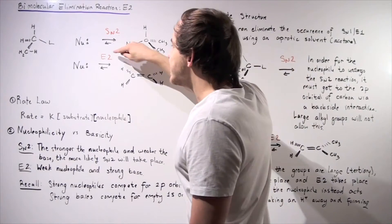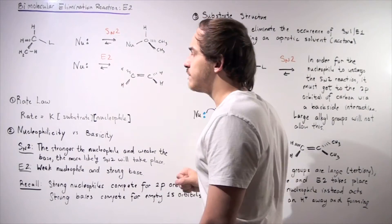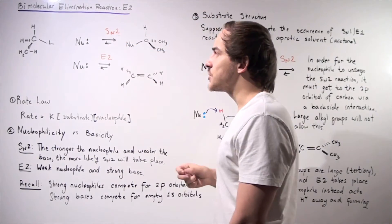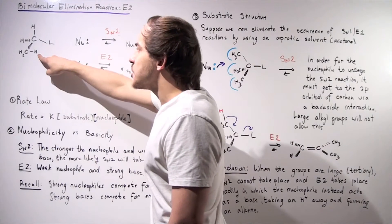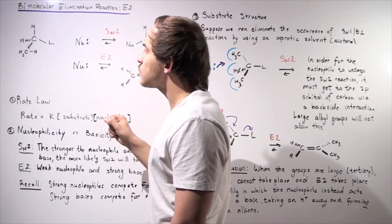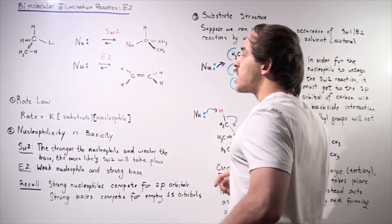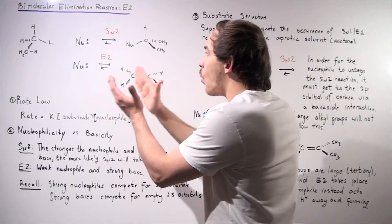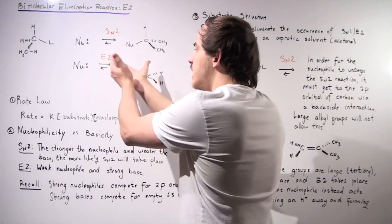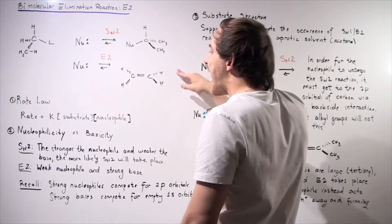What happens in the E2 reaction is slightly different. Instead of acting as a nucleophile, it acts as a base. It takes away this H ion, leaving this pair of electrons. At the same time, this pair of electrons attacks this carbon, kicking off the leaving group. So in both cases, we have a one-step mechanism where the leaving group gets kicked off. But when we follow the E2 pathway, we form an alkene.